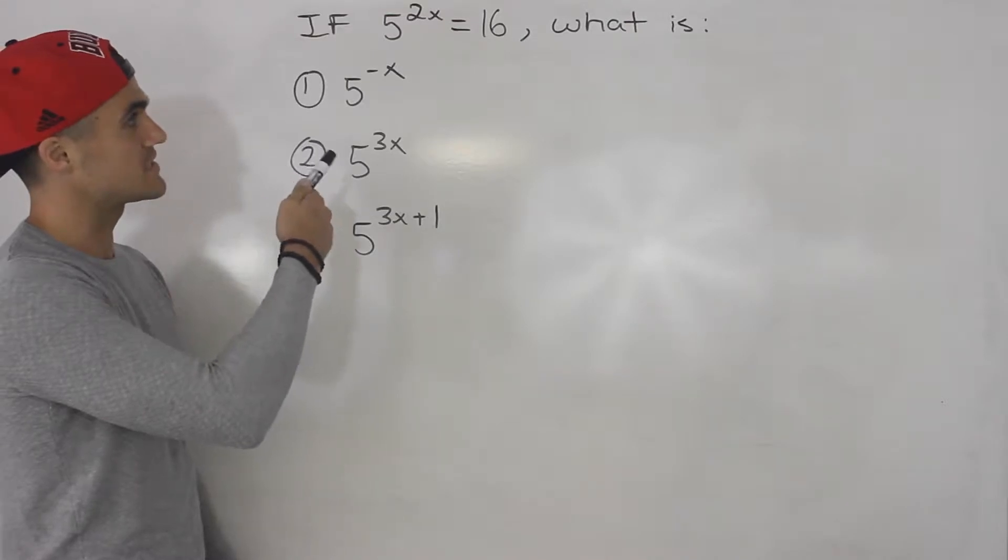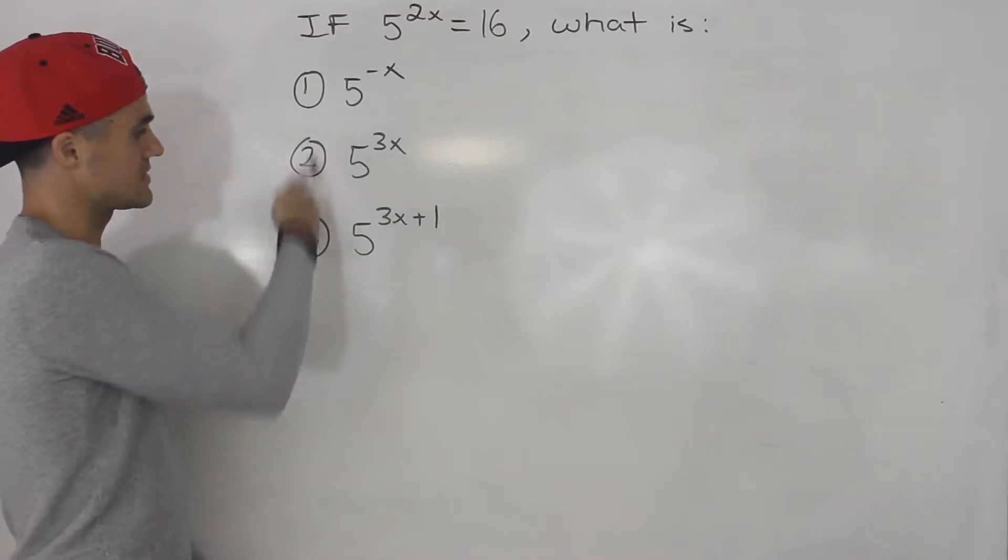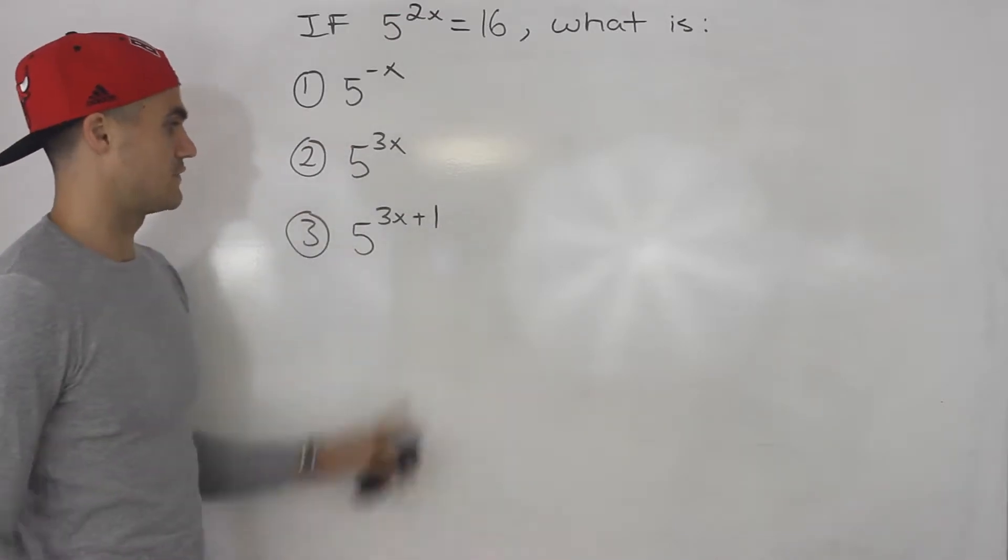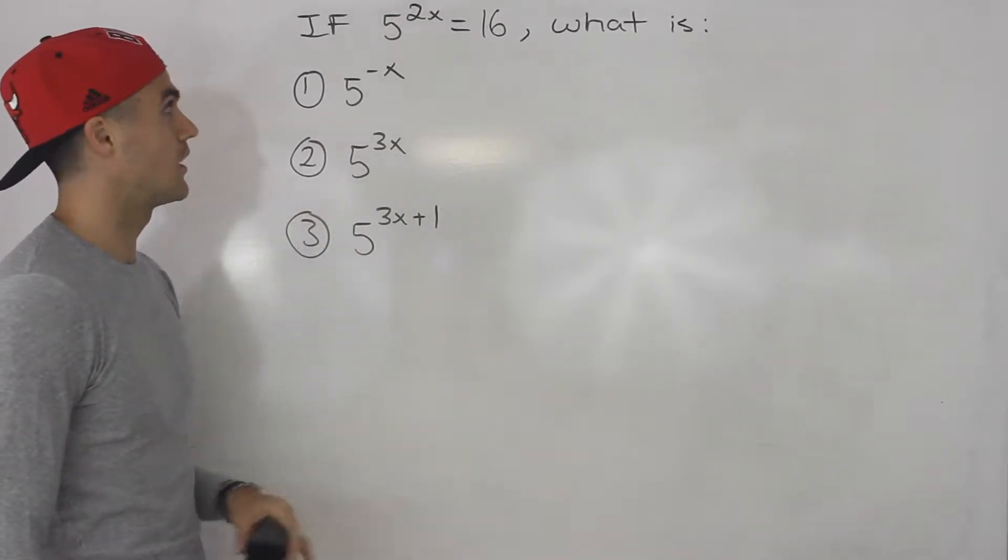So if 5 to the power of 2x is equal to 16, what is each of these three things? 5 to the negative x, 5 to the 3x, and then 5 to the 3x plus 1.